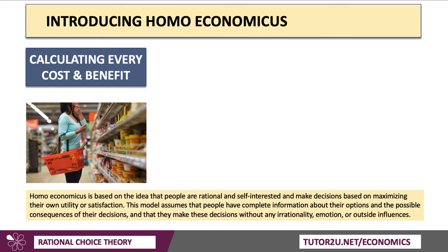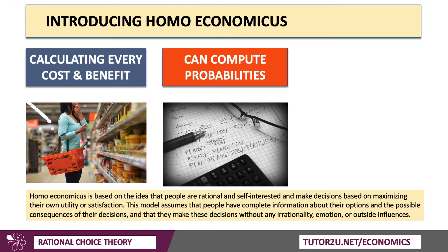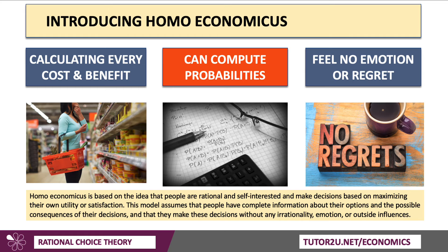Homo economicus calculates every single cost and benefit of every decision. They have the cognitive power to compute probabilities and costs and benefits, and they don't feel any emotion or regret after the decisions they've made. This model assumes people make decisions without any irrationality, emotion or outside influences. But in the real world, people have complex, messy, difficult lives — they operate within social networks and are influenced by their peers. Yet this model has dominated economic thinking for a long time.